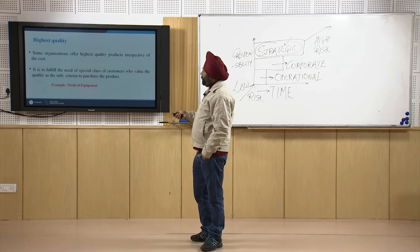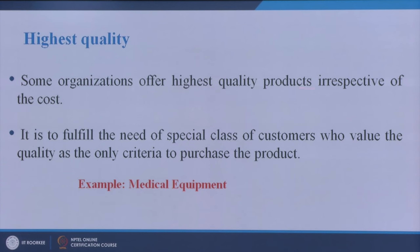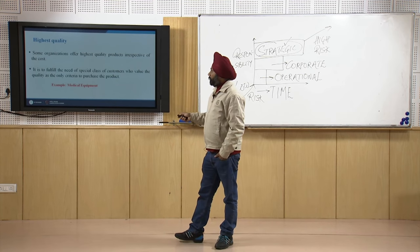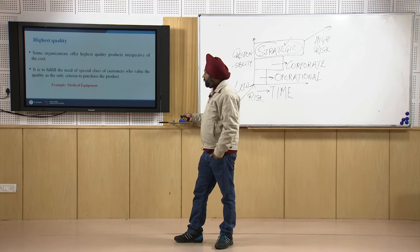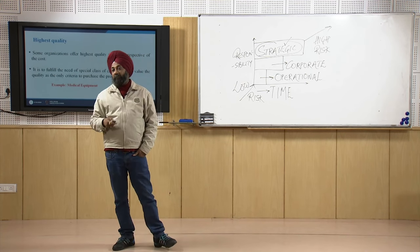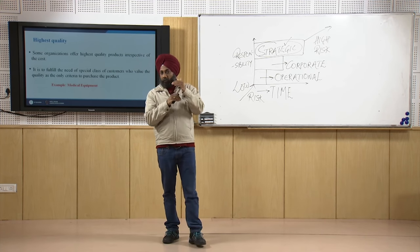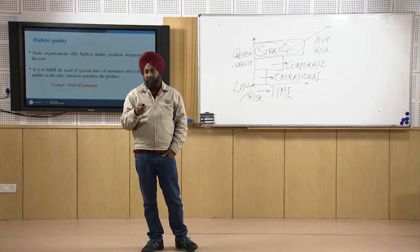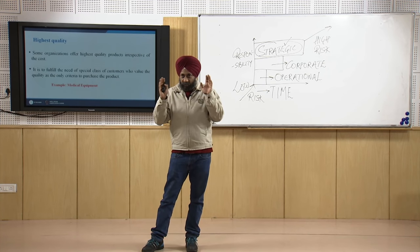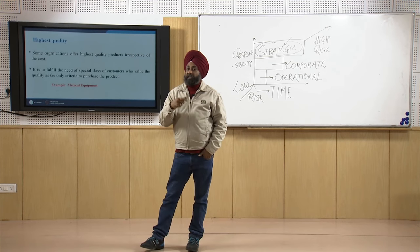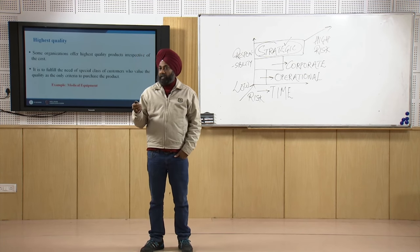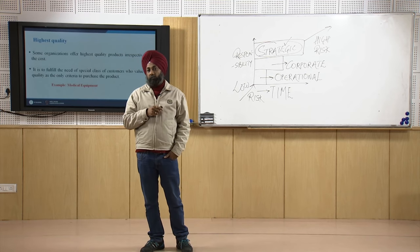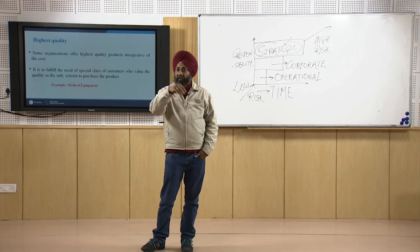For the highest quality policy, some organizations offer highest quality products irrespective of cost. Cost is not at all important — they focus primarily on quality to fulfill the needs of a special class of customers who value quality as the only criteria to purchase. As an assignment, try to find five products or brands where quality is the most important criteria and cost is secondary.